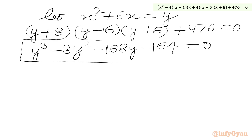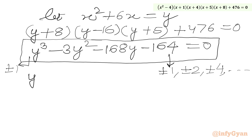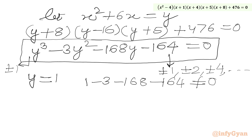This is a cubic equation and we are going to use the rational root theorem and synthetic division method. I need to write the eligible factors of 164: ±1, ±2, ±4, and so on. The leading coefficient is 1, so the possible rational roots are just ±1. Testing y = 1: 1 - 3 - 168 - 164, which does not satisfy our equation, so y = 1 is not a solution.